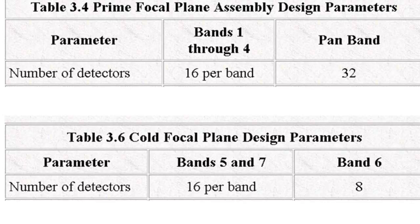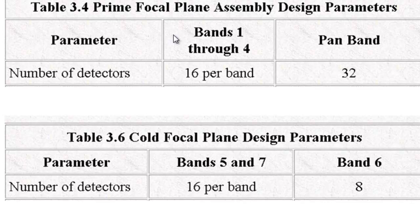Some detectors have to be cold — specifically the shortwave infrared and thermal band detectors, which are on a cold focal plane. For Landsat ETM+ or TM, bands 5 and 7 are the shortwave infrared detectors with 16 detectors per band, and the thermal band has 8 detectors. The prime focal plane uses silicon detectors for blue, green, red, and near-infrared bands — 16 per band for 30-meter pixels or 32 per band for 15-meter pixels on Landsat 7 ETM+.